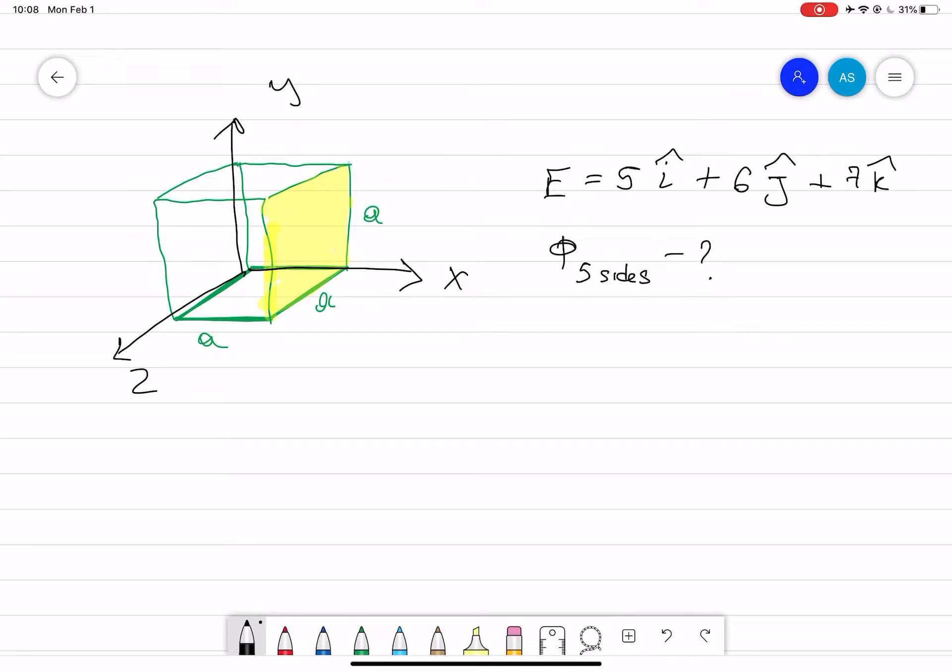As you can see, there's no charge inside the cube. The electric field is passing through somewhere. The electric field is given as 5i plus 6j plus 4k.